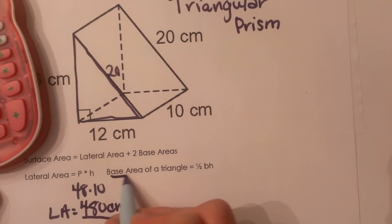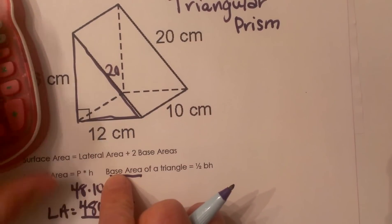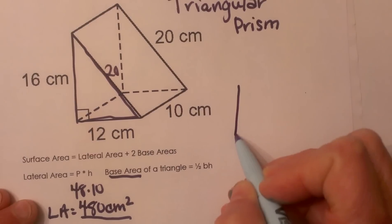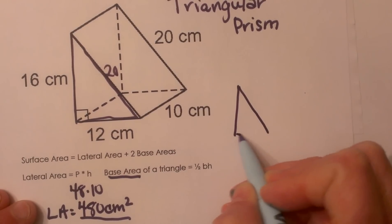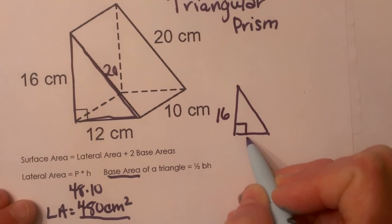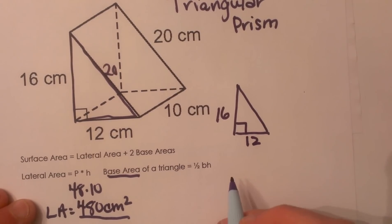Now we need to find our base areas. In this case, our bases are triangles, so you've just got to think of this not as part of the prism. Let's go over here and just draw the triangle for a moment. We're looking at an isolated triangle that is 16 tall and 12 wide, and we're not going to use the hypotenuse for the area formula.